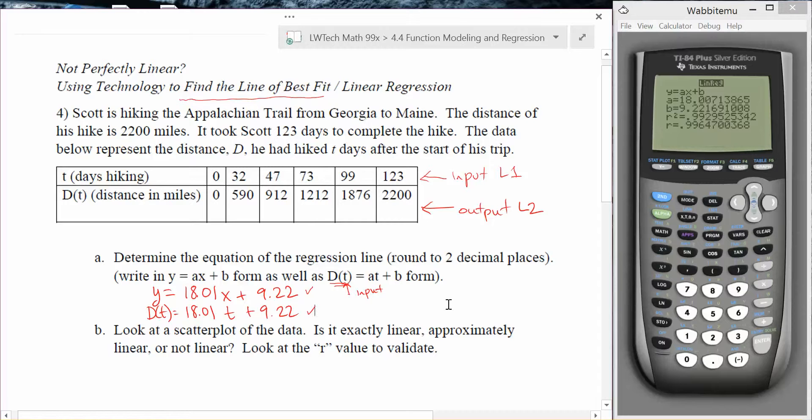Once we have this information, this is the best possible fit equation for our data. Now we can use this information to answer questions about the data set and use it to make predictions. Let's look at part b. Part b asks us to look at a scatter plot of the data and decide, is the data exactly linear, approximately linear, or not linear at all? Look at the r value to validate.